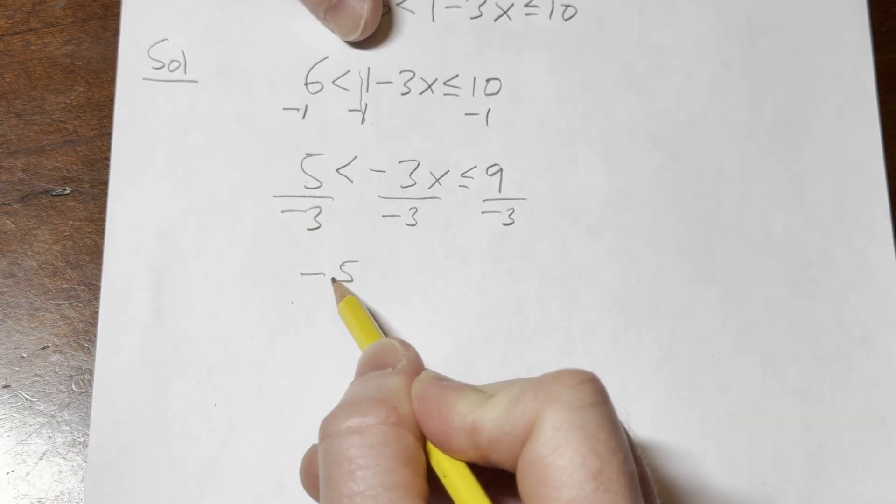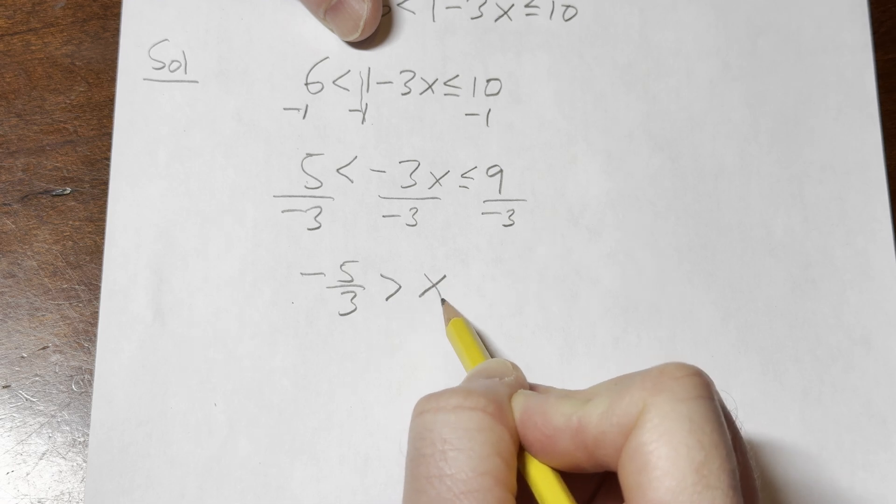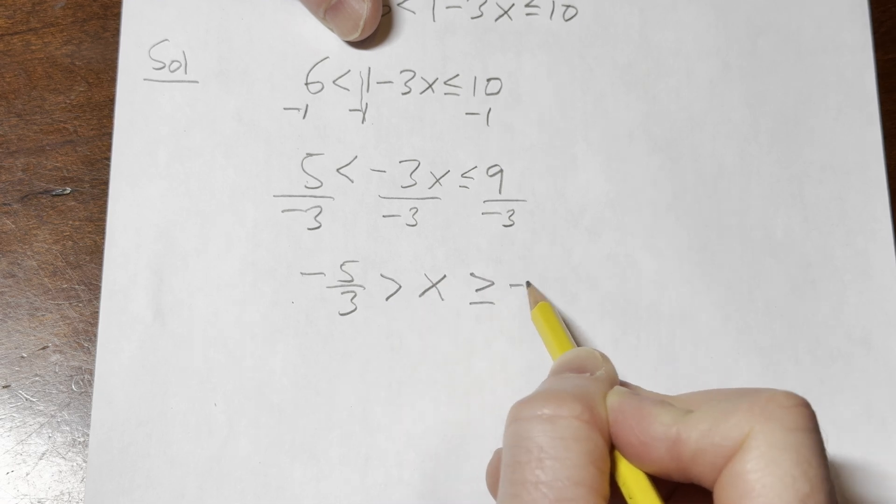This is negative 5 thirds, and then flip the sign, x, flip the sign, negative 3.